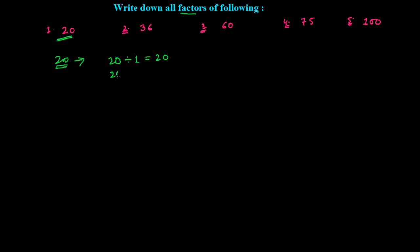20 is divisible by 2, giving 10 times. Similarly, 20 is divisible by 4, giving 5 times. Are you seeing any more possibilities? There are not. Like 1 can divide this 20, and 20 itself can divide 20.